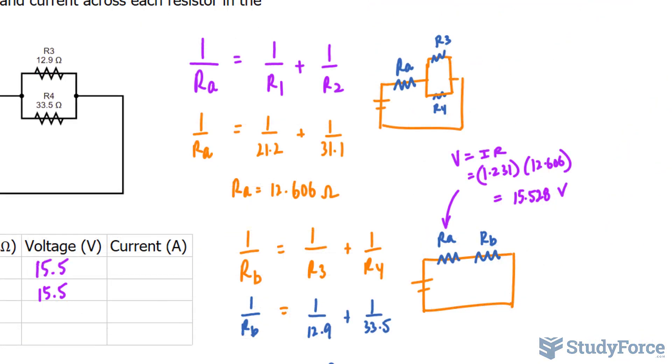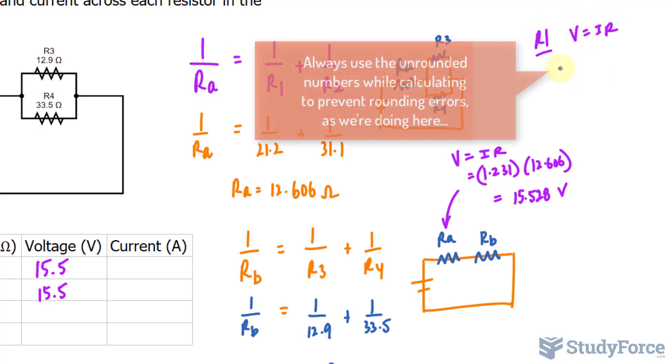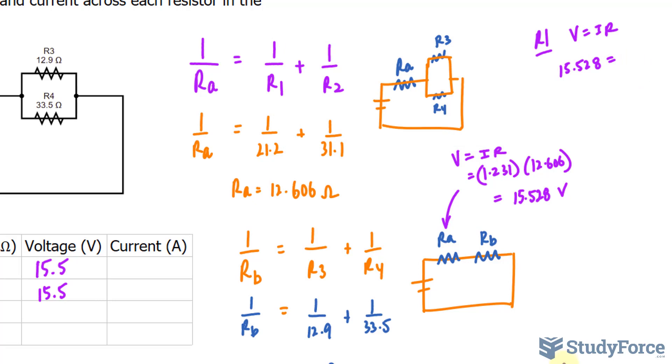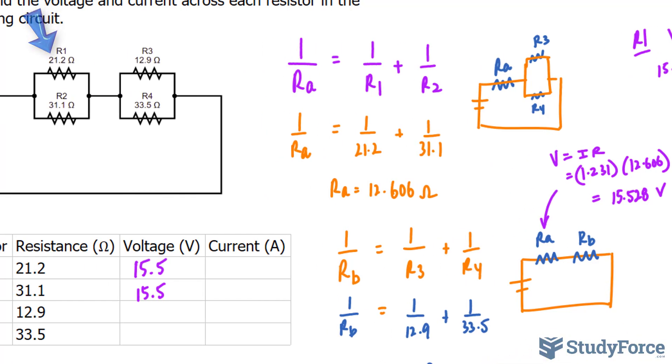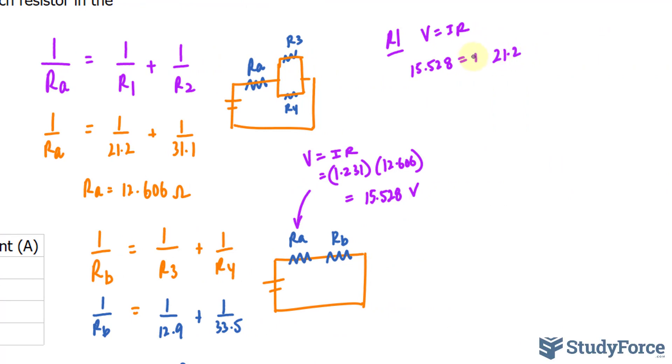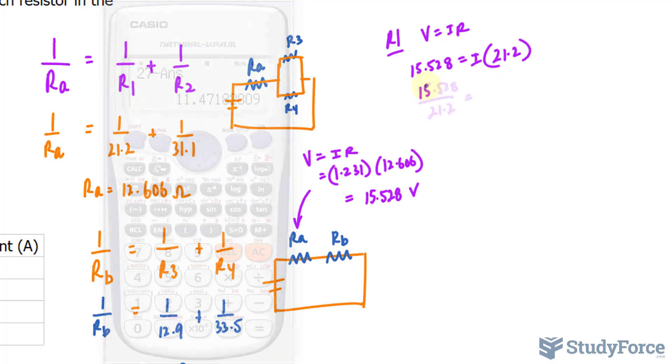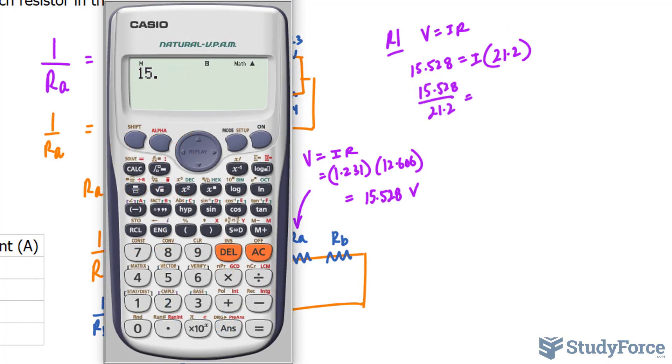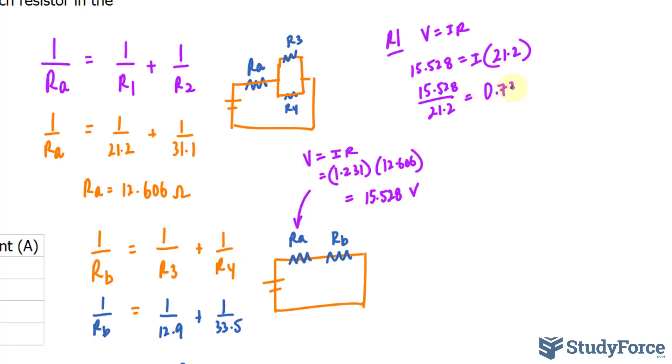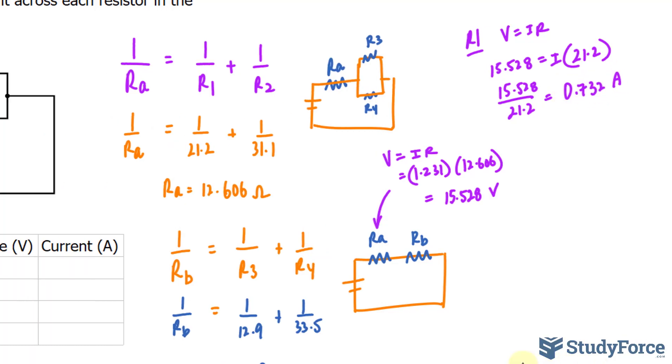Now remember, RA is composed of R1 and R2. Using Ohm's law, V is equal to IR. I know their voltage, both of them, will be 15.528. Their current is what we don't know. Their resistance is given in the question as 21.2. And we can actually solve for current by dividing both sides by 21.2. So, taking the value of 15.528 and dividing it by 21.2 gives us an answer of 0.732. 0.732 is the current at R1.